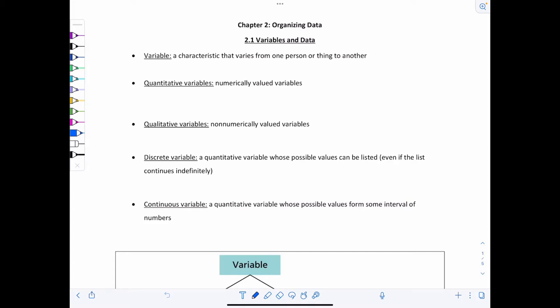Some examples of variables, if we're talking about humans, would be their height, their weight, number of siblings, marital status, eye color, etc. And we distinguish between our types of variables based on the following criteria.